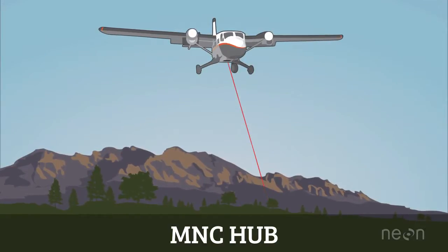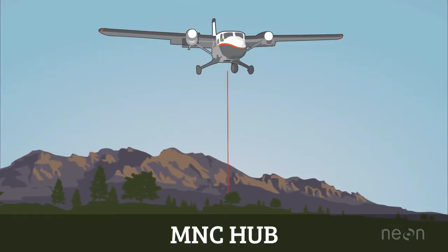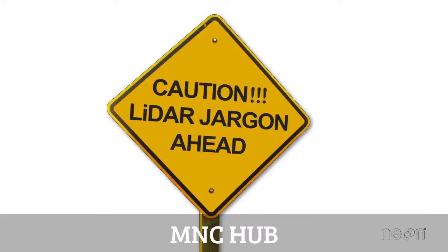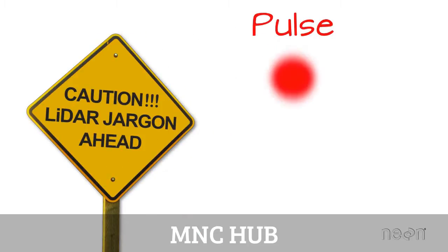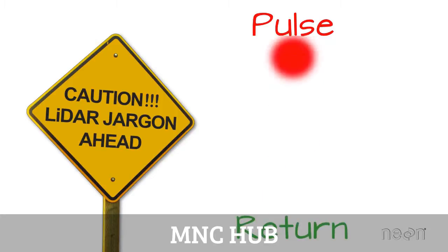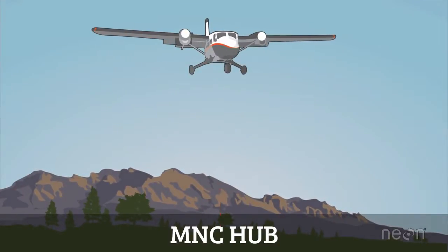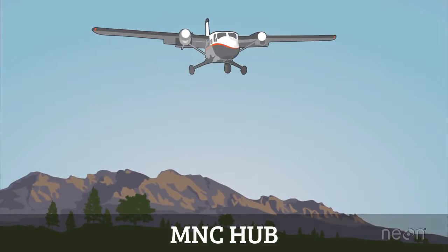The laser in a LIDAR system scans the Earth, actively emitting light energy towards the ground. Let's define two key LIDAR terms. First, a pulse simply refers to a burst of light energy emitted by the LIDAR system. Second, a return refers to reflected light energy that has been recorded by the LIDAR sensor. So pulses of light energy travel to the ground and return back to the LIDAR sensor.